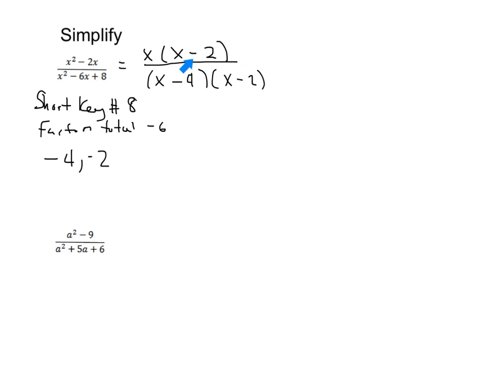And now let's take a look over here. You see we have a factor of x minus 2 up here, and we have a factor of x minus 2 down here. So what we can do is we can now cancel out those factors of x minus 2, and what we're going to be left with on top is an x, and what we're going to have on the bottom is x minus 4.